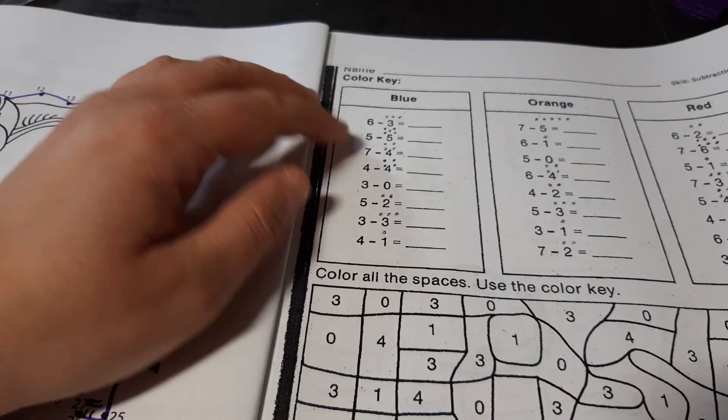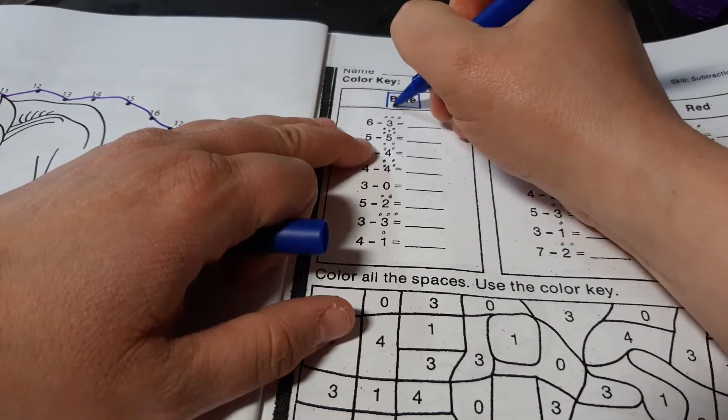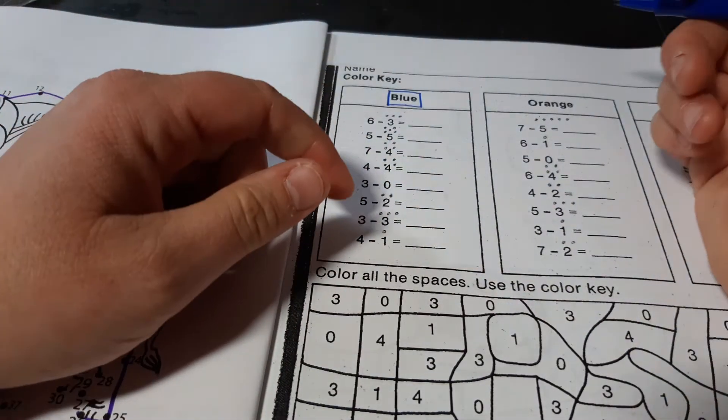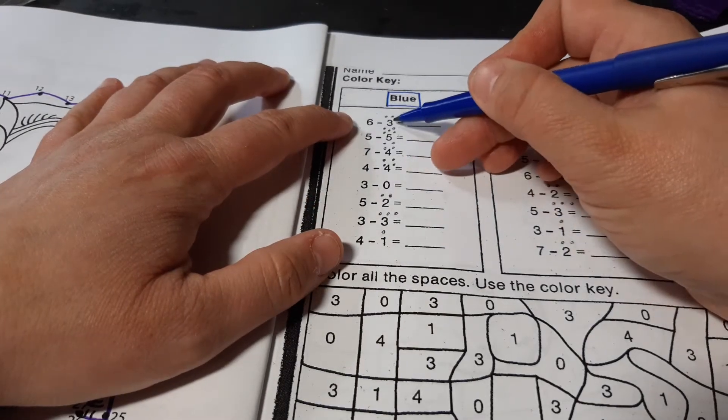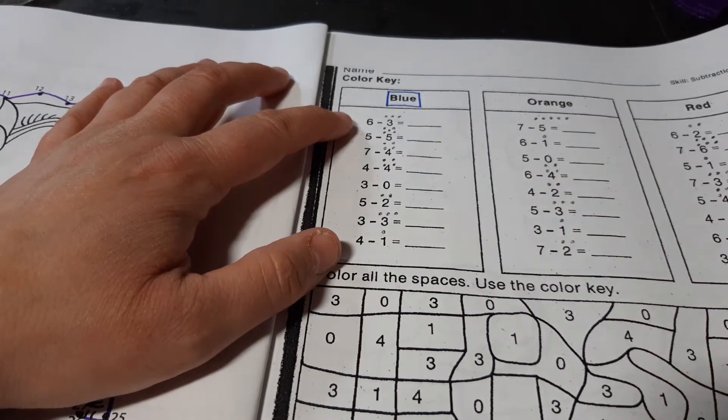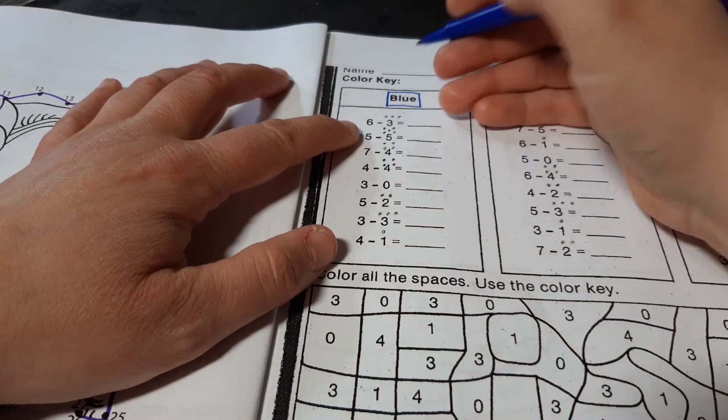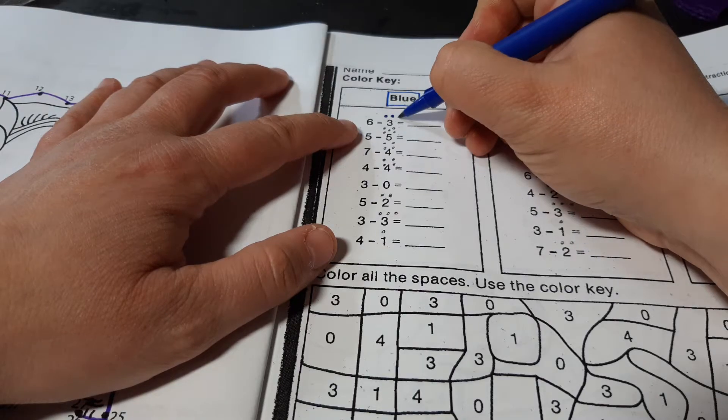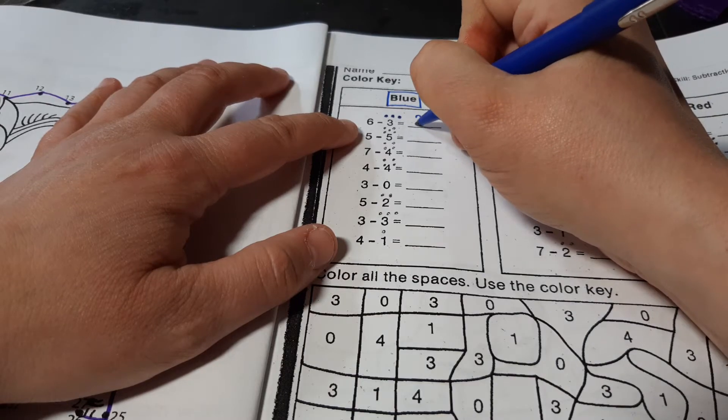Okay, so this first section is blue. Okay, so that's the first section. Let's see, we have 6 minus 3. Well, I know that I can count backwards to subtract, so I have 6, 5, 4, 3. I stopped on a 3. That is my answer.